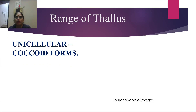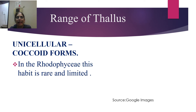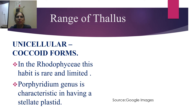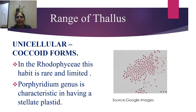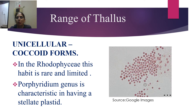Now we move to the first type: unicellular coccoid forms. In Rhodophyta this habit is rare and limited. The genus Porphyridium is characteristic in having a stellate plastid. You can see here how it looks like — these are the coccoid forms. This is Porphyridium.